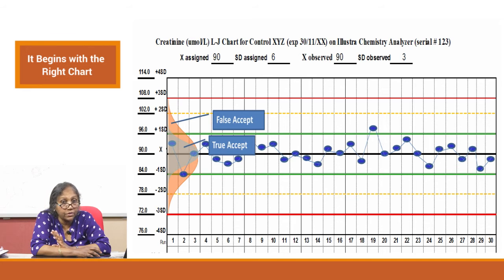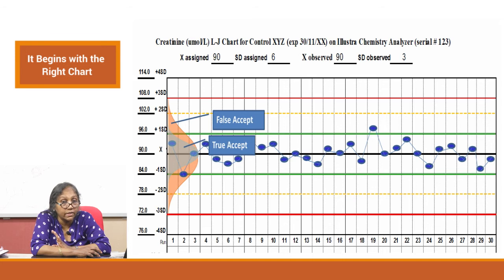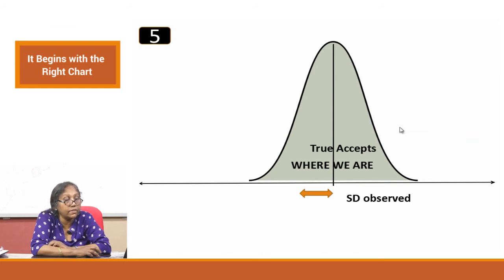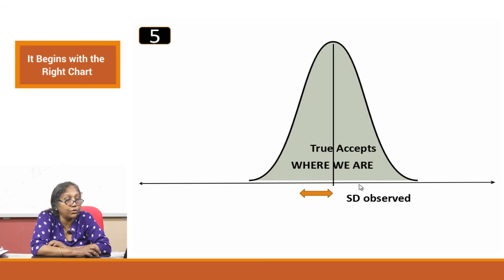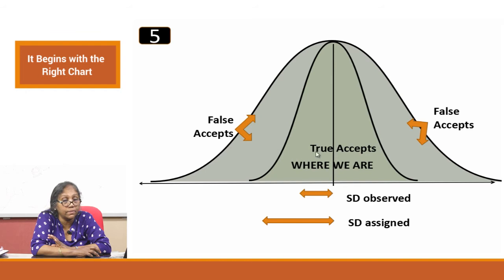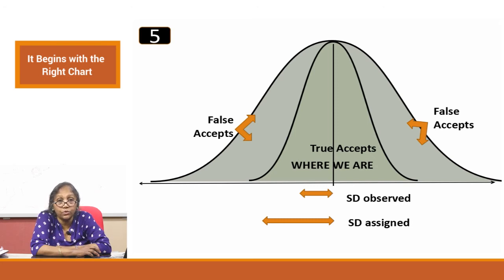Can you have 100 percent of your data falling between plus and minus 1 SD? That region can only contain 68 percent. So if everything sits there, that is a wrong graph — it is not a Gaussian. Only a small area represents true accepts; beyond that you are falsely accepting readings because you have not defined your SD correctly. You are assigning it much larger than observed, so you are accepting many false values that should have been rejected.